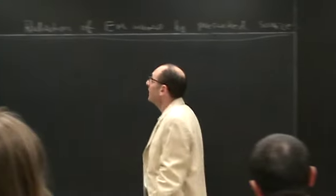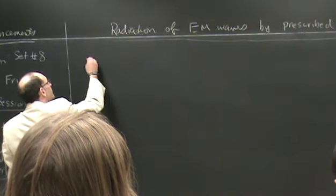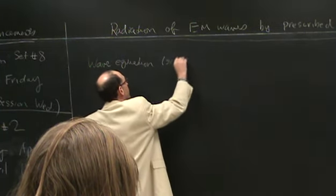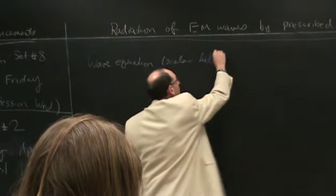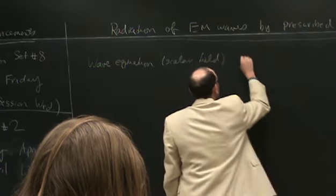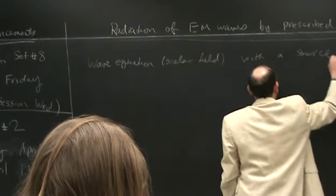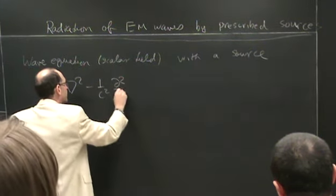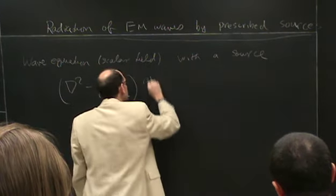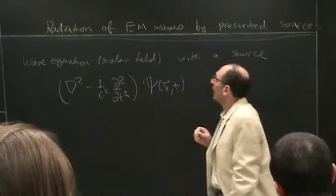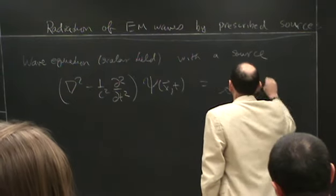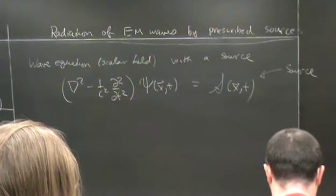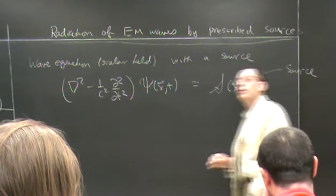To do that, let's first think about the wave equation. Let's think about it for a scalar field — let's forget about the vector nature of the wave for the moment with the source. So we have the wave equation with some wave propagation speed C, which would be the field equal to some source. And we have looked at the homogeneous solution, where the source was zero, but now we want to look for the particular solution.